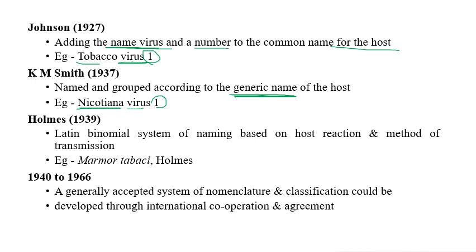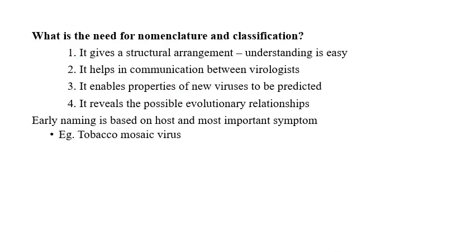Holmes followed a Latin binomial system of naming based on host interaction and method of transmission — for example, Marmor tabaci, given by Holmes. Between 1940 and 1966, there were many nomenclature and classification systems developed through international cooperation and agreements, but there was no exact governing body to set unified rules and regulations until 1966.